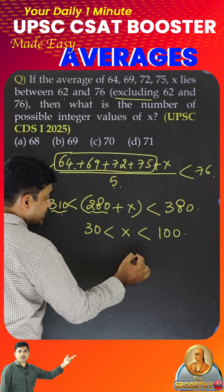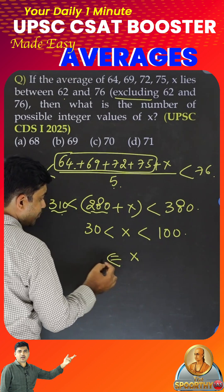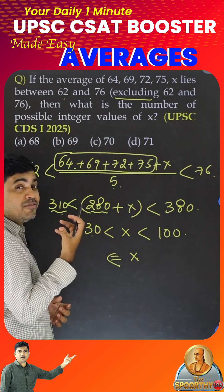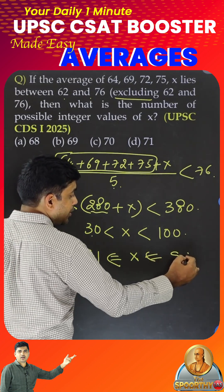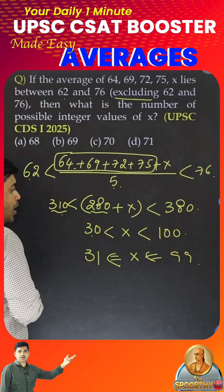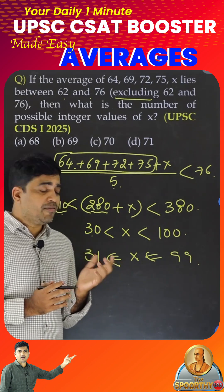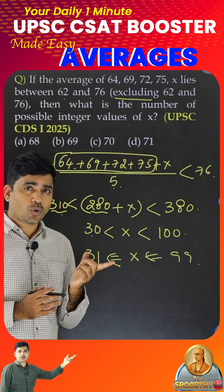So, X value minimum: see, after 30, what is the first integer? 31. Now, maximum will be 99. So, X value will be from 31 to 99.